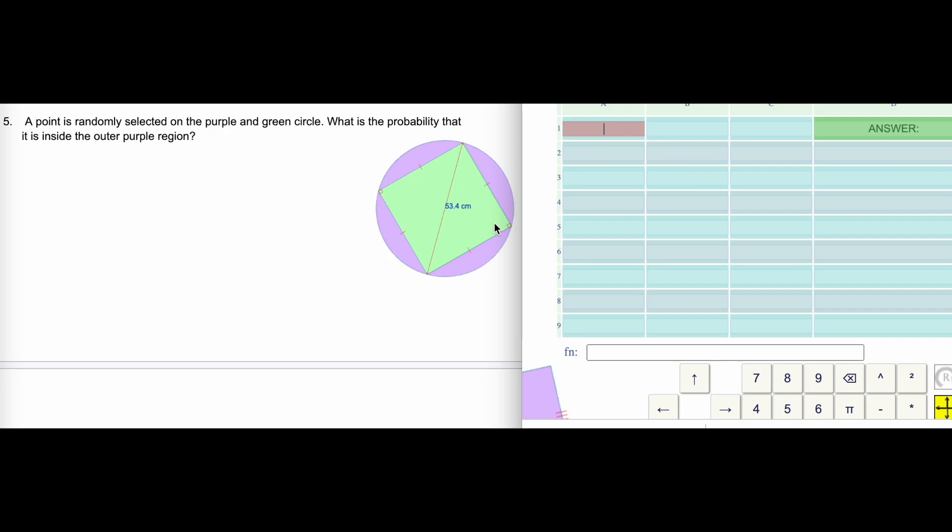We want to find the area of the circle and the area of the rectangle. We need to figure out the radius. Well, this is the diameter. The radius is half of that. The diameter is 53.4, so the radius is half of that.